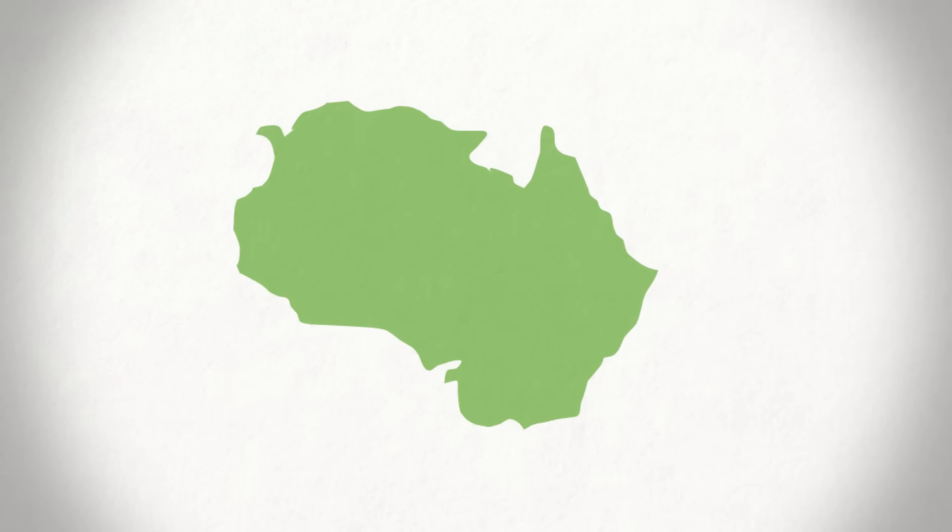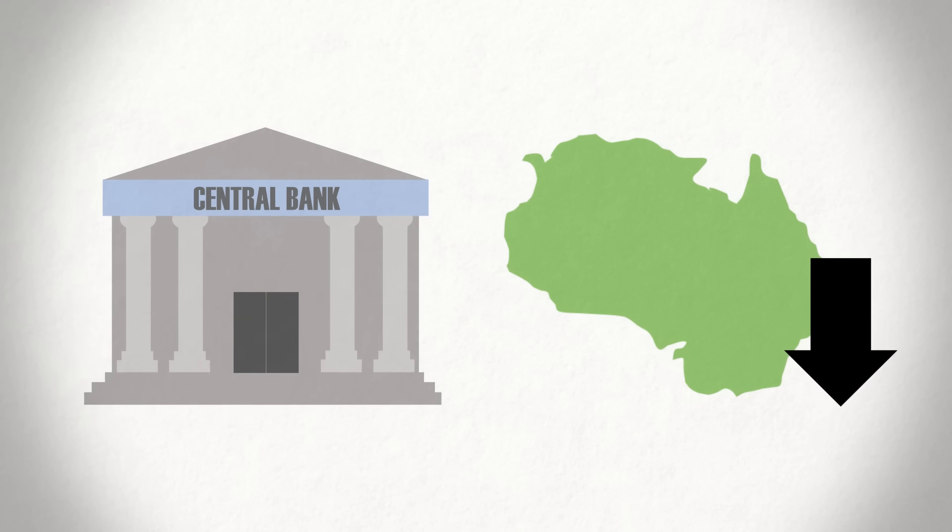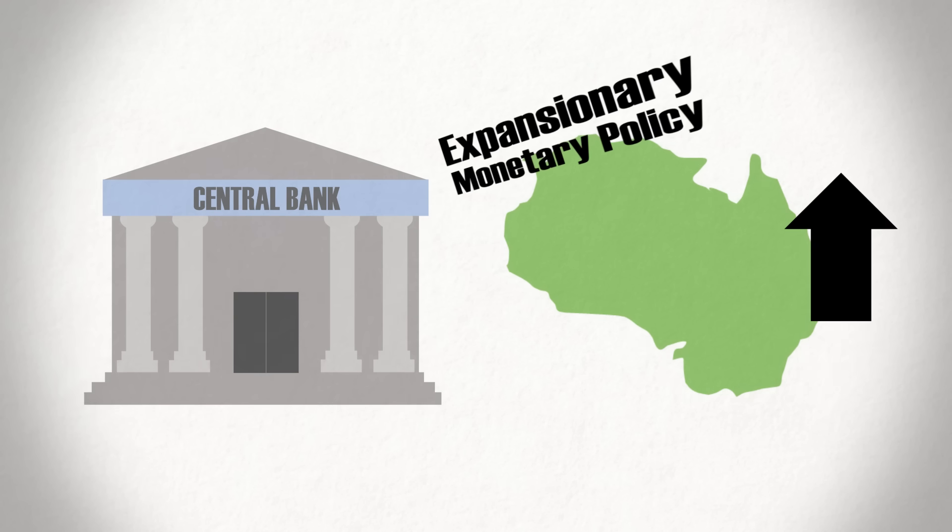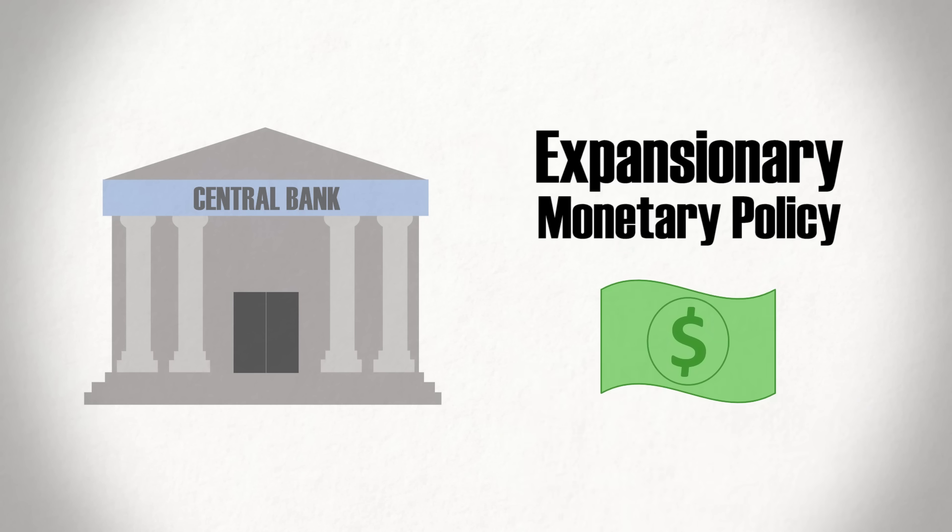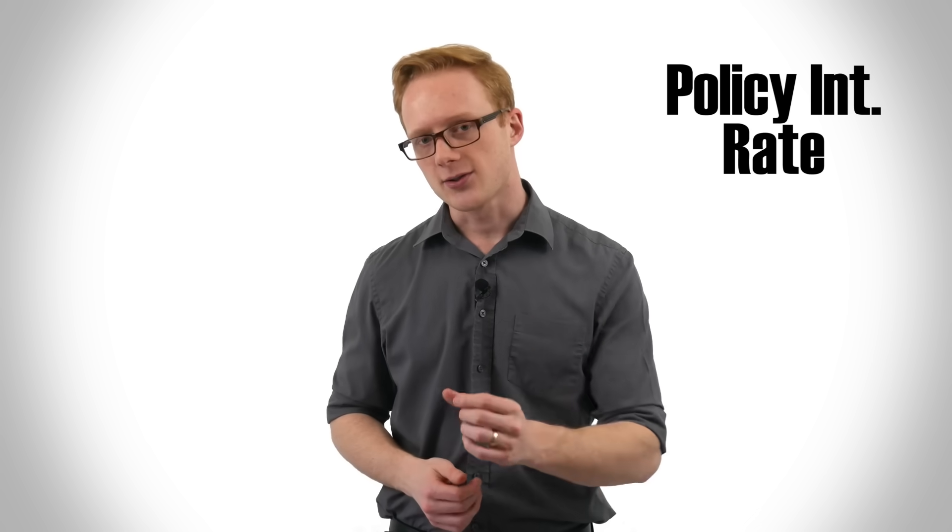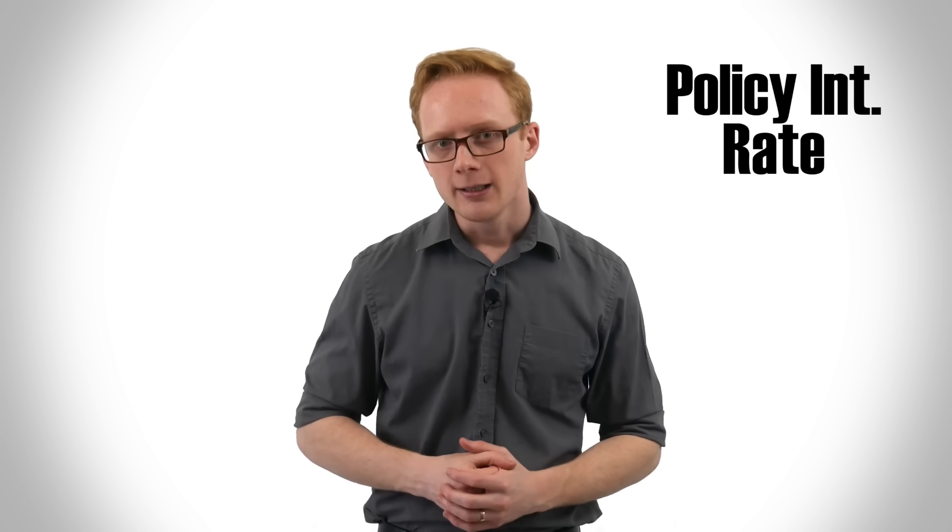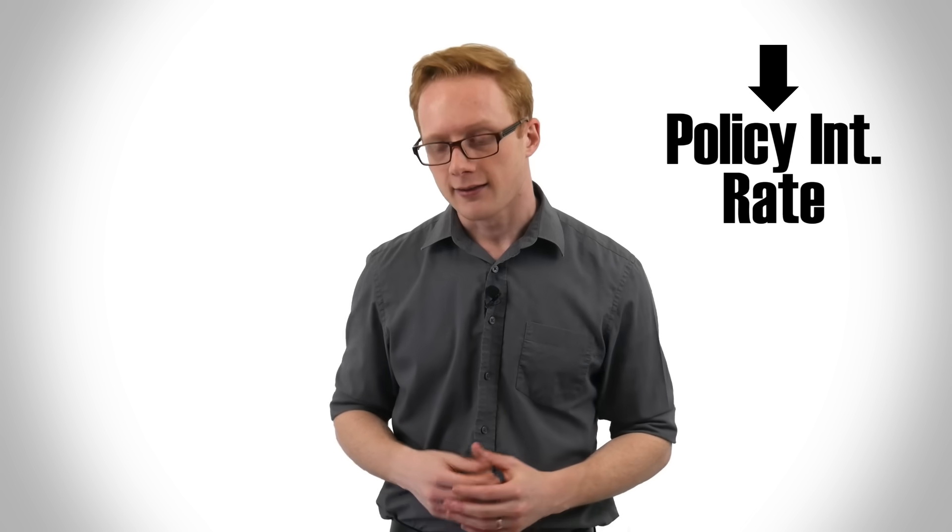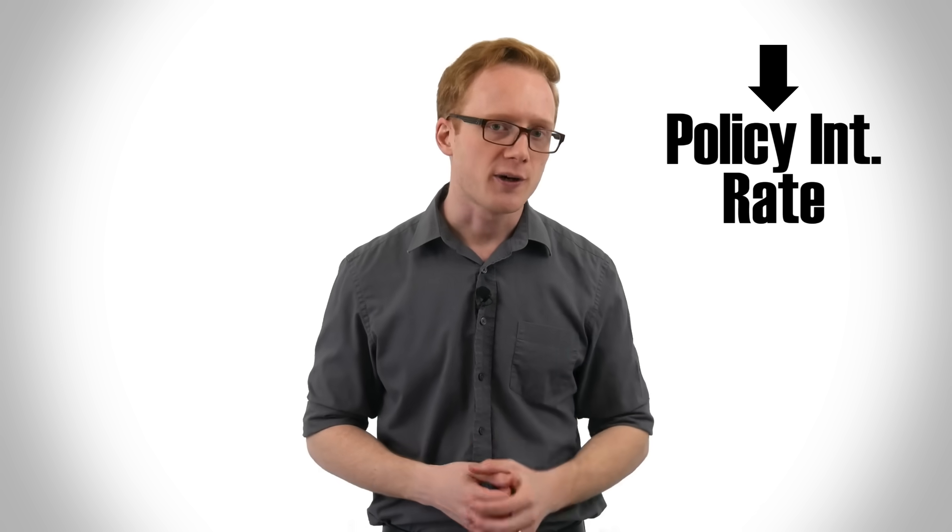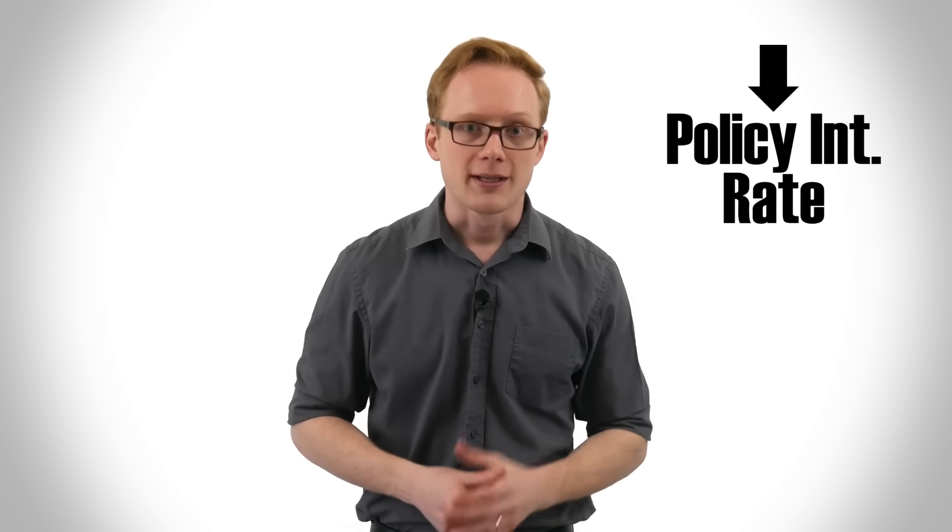So when a country starts to show signs of a slowing economy, the central bank will typically step in to try and boost business activity through expansionary monetary policy, which involves influencing the country's currency to encourage more spending and lending. One way they do this is by changing their policy interest rates, which you hear about in the news quite a bit, especially within the last decade. By lowering interest rates they pay on their deposits that they receive from other banks, the central bank applies downward pressure to other interest rates within the economy, from interest rates paid on government bonds and corporate debts to car loans and mortgages that you or I might take out.